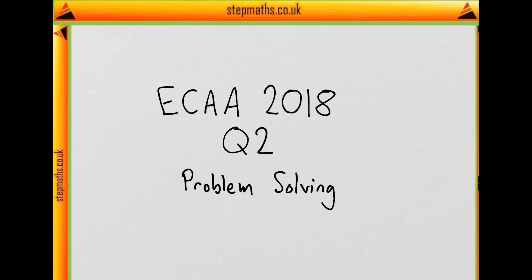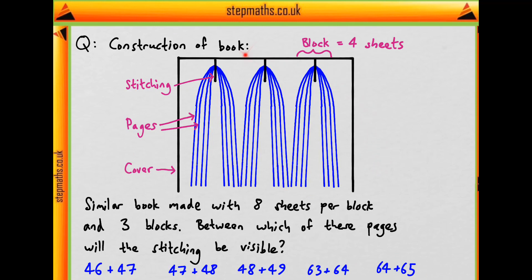This is question two on problem solving from the 2018 ECHA. So we're told that this is how a book is constructed, with this being sort of the top-down view down the length of the pages.